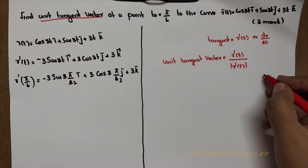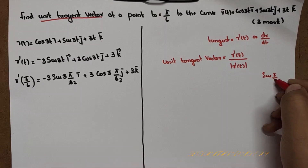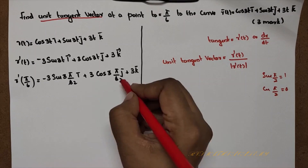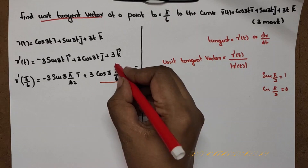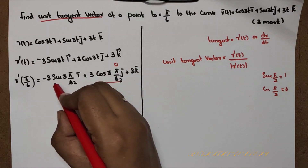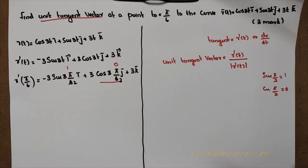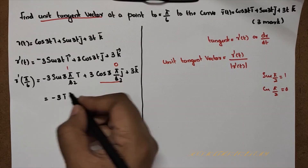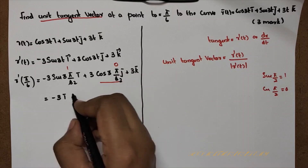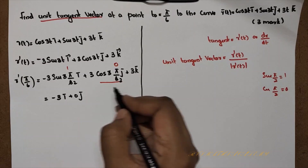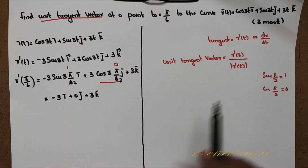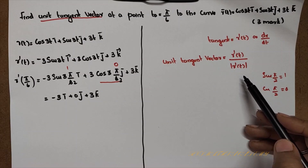sin(π/2) equals 1 and cos(π/2) equals 0. Substituting these values, r'(π/6) equals minus 3i plus 0j plus 3k.